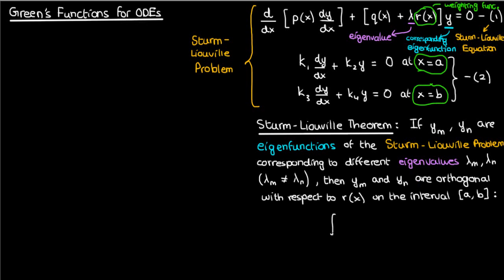In other words, this integral, the integral from a to b of r of x y_m y_n dx, this integral would be zero.